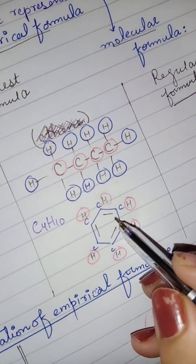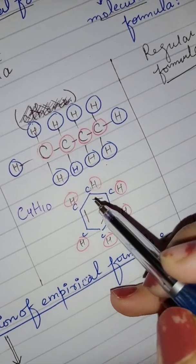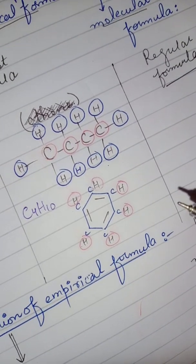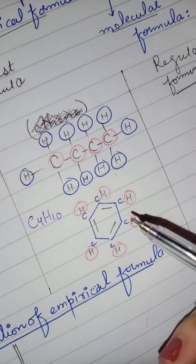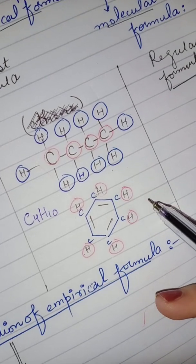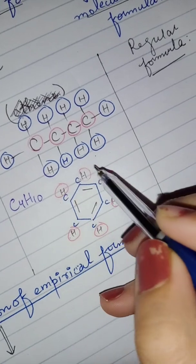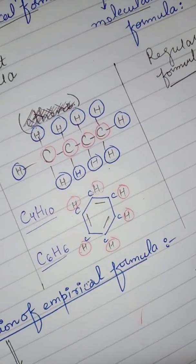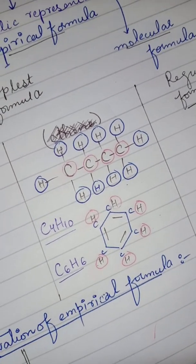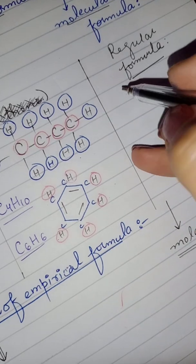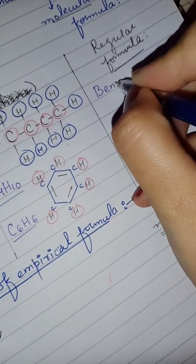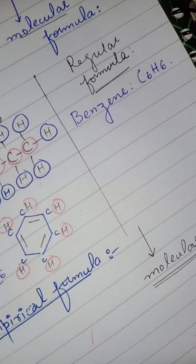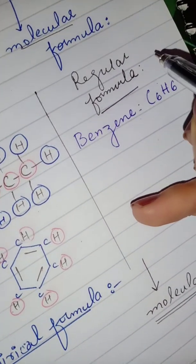Now this very famous structure is known as benzene. Counting the carbons: carbon 1, 2, 3, 4, 5, 6 — so we have C6. And since carbon makes four bonds at one time, we can count the hydrogens: 1, 2, 3, 4, 5, 6 — giving us H6. So the benzene formula is C6H6.